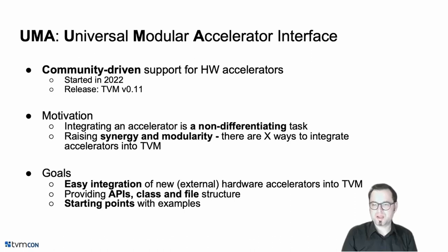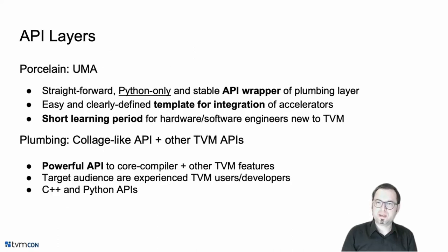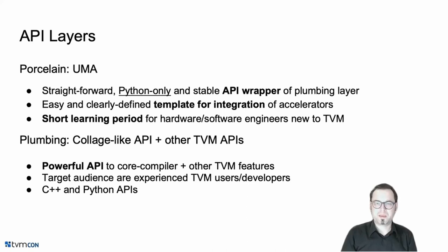Essentially, UMA now provides APIs, classes, and file structures, and also examples for people to begin with to integrate new accelerators. UMA effectively builds a second layer above the TVM APIs. To use the Linux terminology — porcelain and plumbing layer — UMA builds a stable Python-only API that has clearly defined templates for integrating new accelerators and also has a pretty short learning period. That's why it targets hardware engineers as well as software engineers, especially those new to TVM. This wrapper then builds on top of the classic collage-like APIs and other TVM APIs, which are certainly more powerful and additionally provide C++ interfaces, but require more experience.